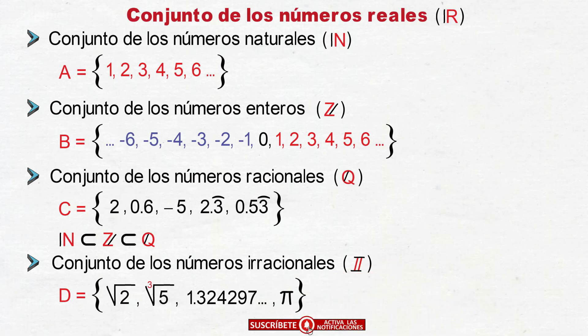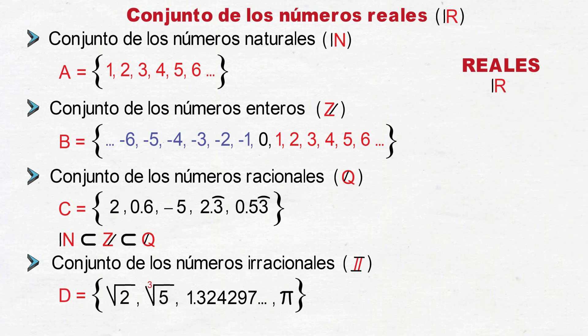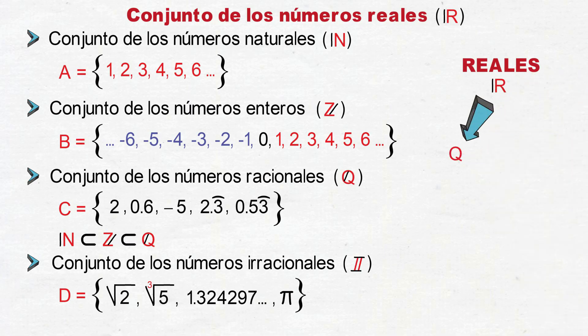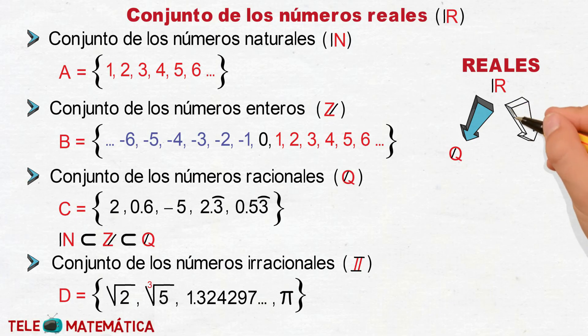A manera de resumen podemos concluir que el conjunto de los números reales está formado por los números racionales y los números irracionales.